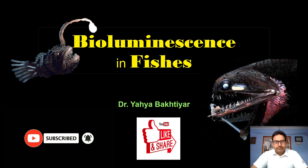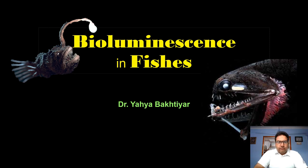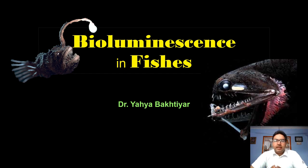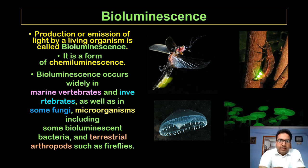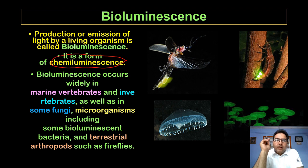When we say bioluminescence, 'bio' means life and 'luminescence' means light — that is, light produced by living organisms. We are talking about bioluminescence particularly in fishes. It is a kind of chemiluminescence because it is actually the reaction of chemicals which produces light by forming photons.